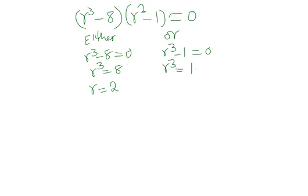From R cubed equal to 1, R is the cube root of 1, which is 1. We pick R equal to 2 from R cubed equal to 8, and not R equal to 1, because when R equals 1 we cannot have a progressive series. So the value of R is equal to 2.